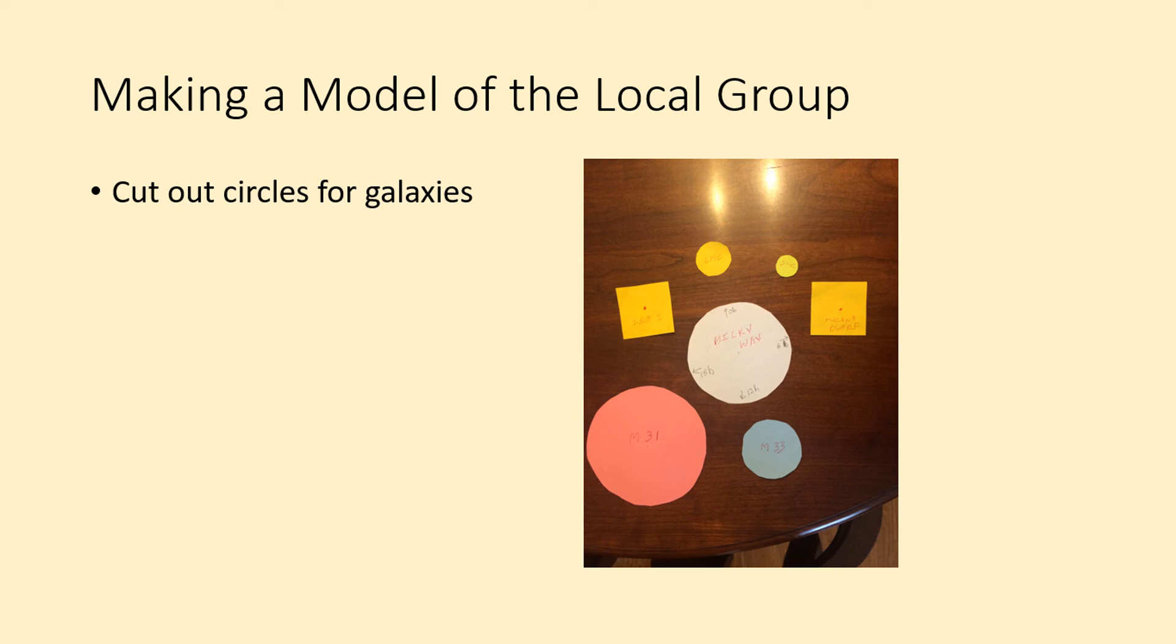Also note that the smallest two galaxies on the list, Leo I and the Takana Dwarf, are small enough that it's probably easier to just draw them on a small piece of paper. You might lose them if you try to cut them out.